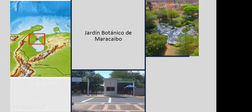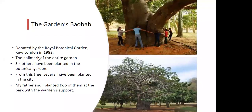I want to give also a little background about myself. I am an international student and I was born in Venezuela, where I also took most of my classes in high school. While I was there, I worked in community service for the Jardín Botánico de Maracaibo — the botanical garden of the city of Maracaibo. In the garden itself, we have a baobab that was donated by the Royal Botanical Garden in Kew, London in 1983. It is the hallmark of the entire garden and from this single tree, six others have been planted in the garden itself and others have been planted around the city. In fact, my father and I went to a nearby park and managed to plant a few of them with the warden's support as well.